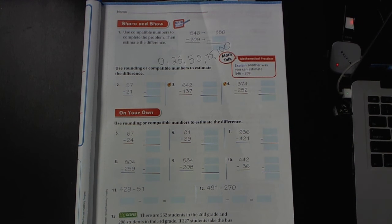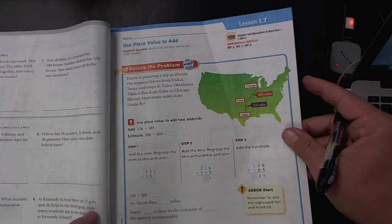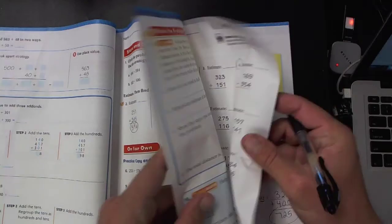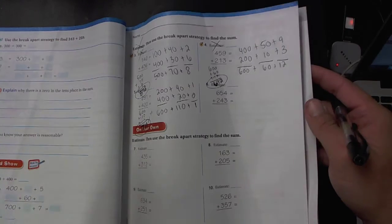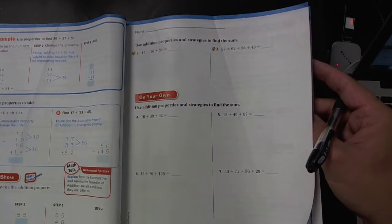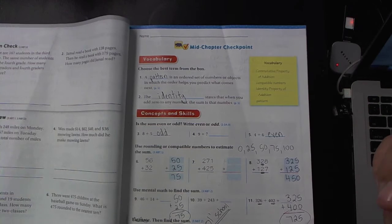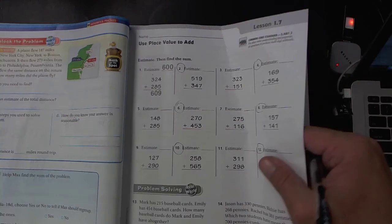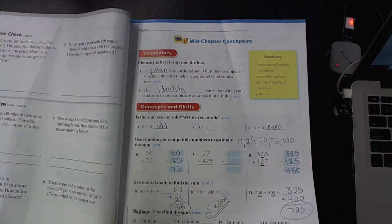And you guys are familiar with this. I think it was 1.6. Place value to add one. No, that was the break apart strategy. 1.5 was it? Use properties to add? No. I don't know. We've done this before though. Oh, here it is. Oh no. That was the mid chapter checkpoint.